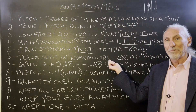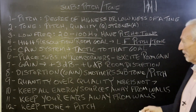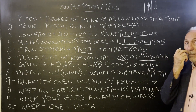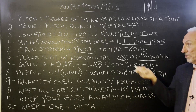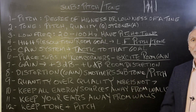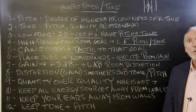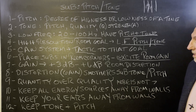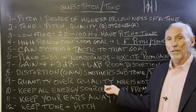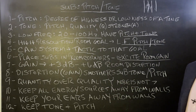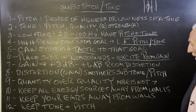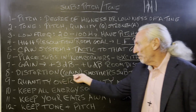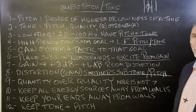So this is my beef with placing subs in the corners of the room: you excite the room modes, you excite room gain. All modes end in the corners, so you put more pressure in the corners and excite all those modes. Why do we want more distortion? Isn't the goal less distortion? It's that old quantity over quality — let's get more energy and forget about pitch and tone. More is not better. The gain from the corner smothers tone and pitch in your sub.